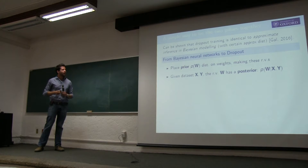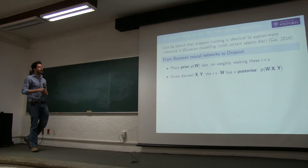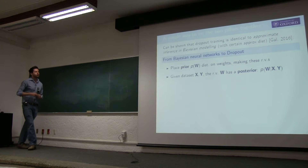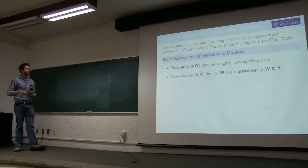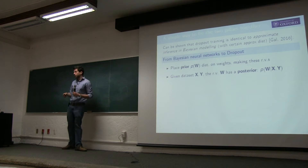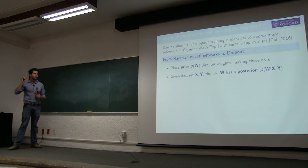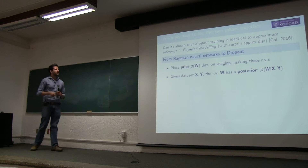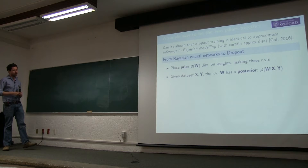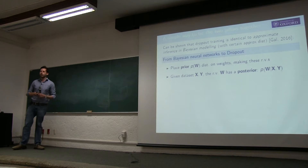Early work looked at analytic ways of doing posterior inference for binary models or Laplace approximations. In 1989, Yann LeCun had a paper on approximate inference in Bayesian neural networks using a Laplace approximation. In 1991, Hinton and Van Camp had a paper looking at Bayesian neural networks from a compression perspective, developing the tools of what we call today approximate variational inference.